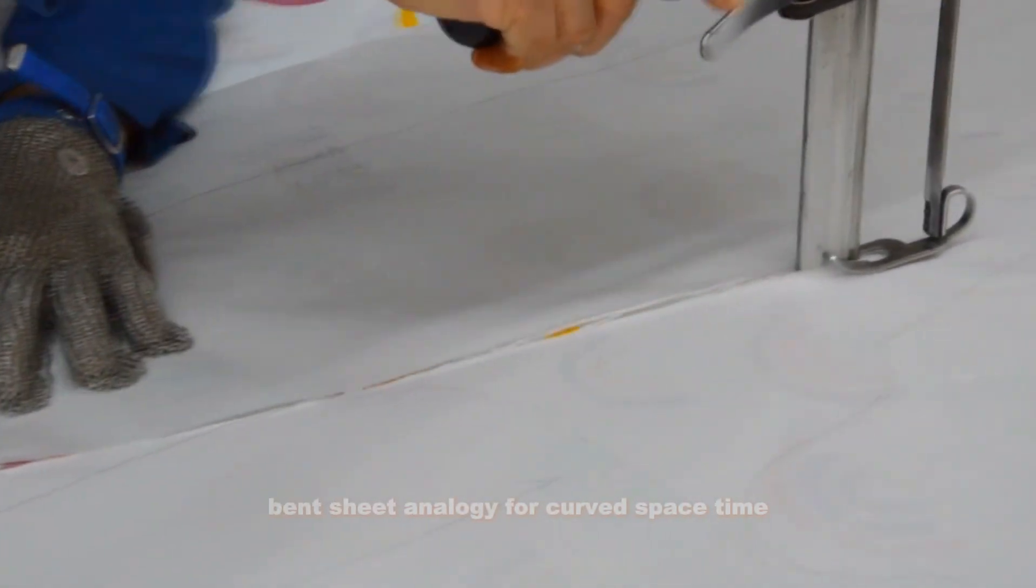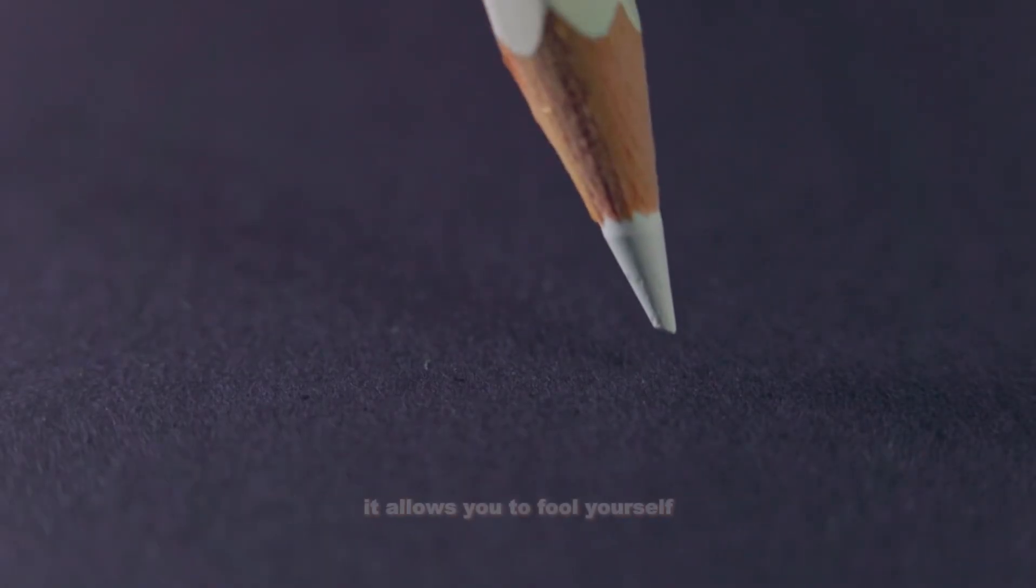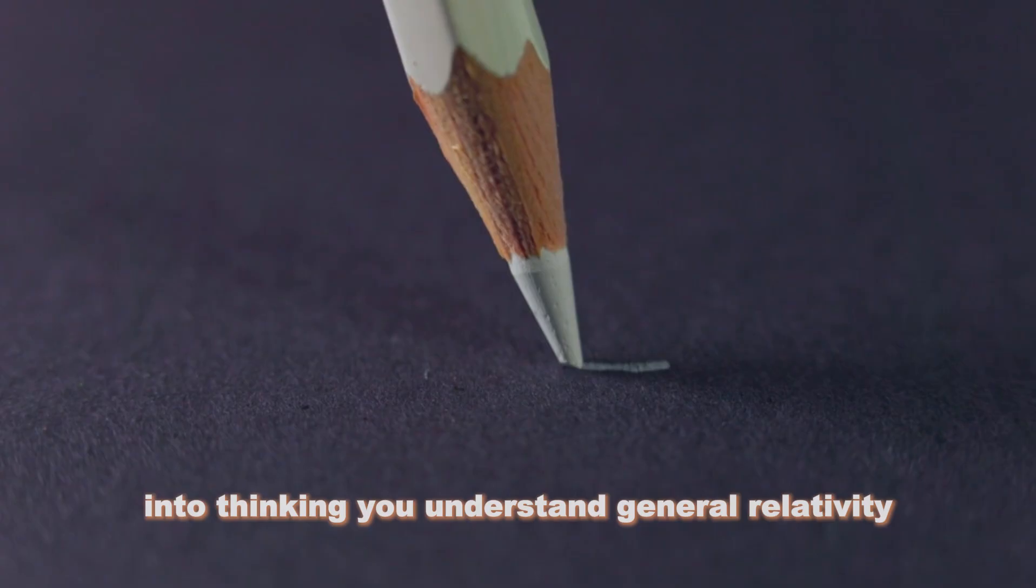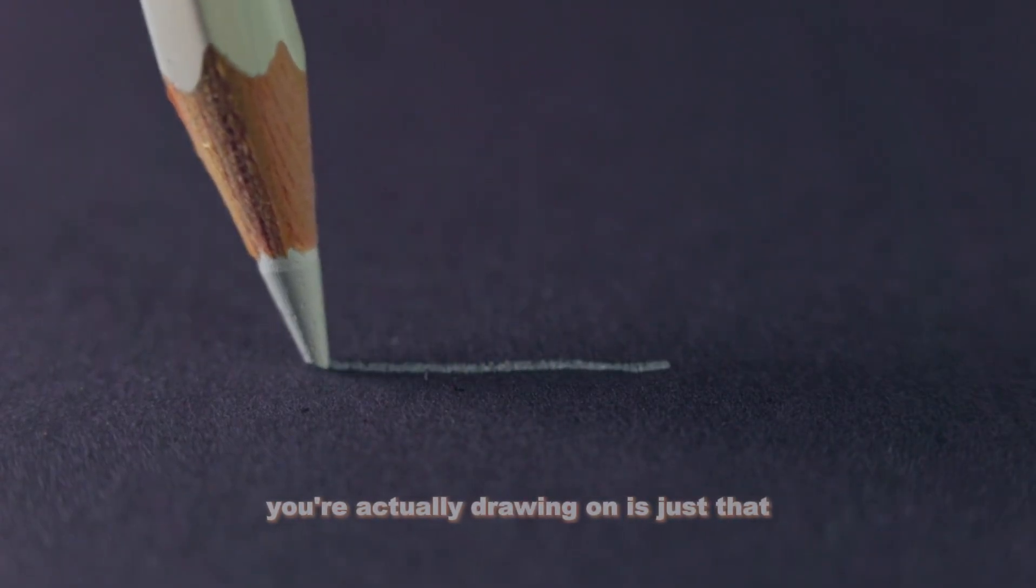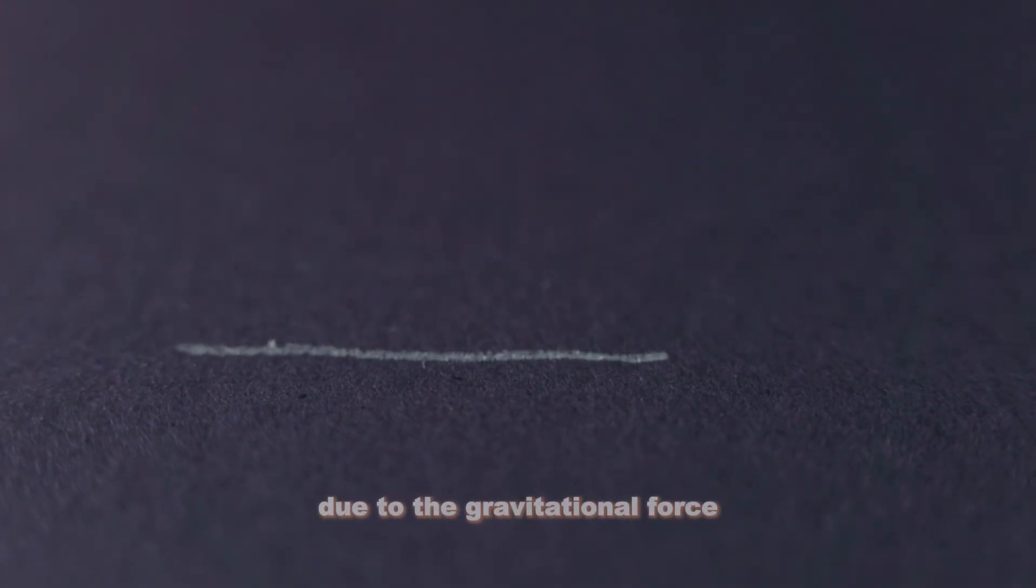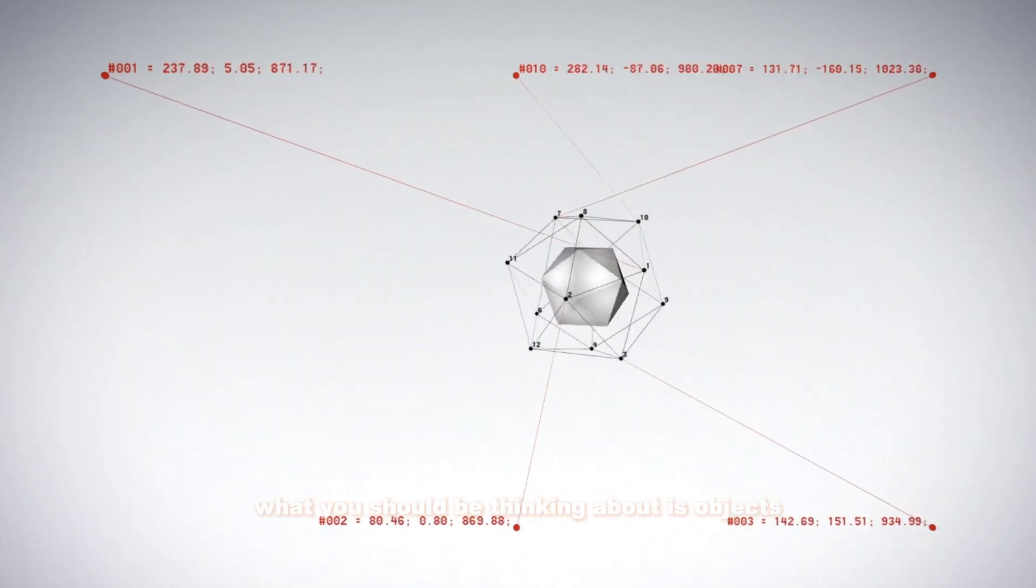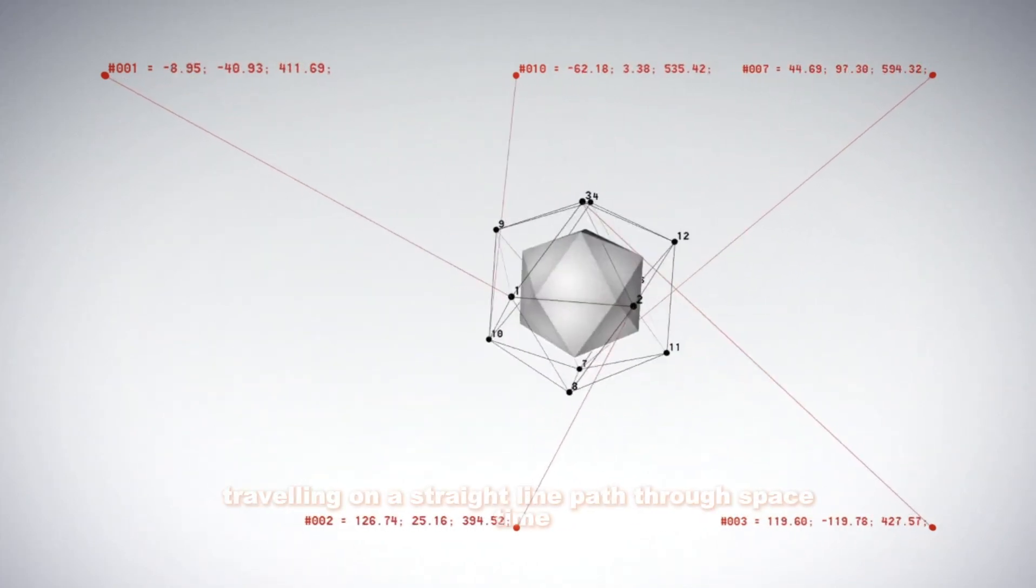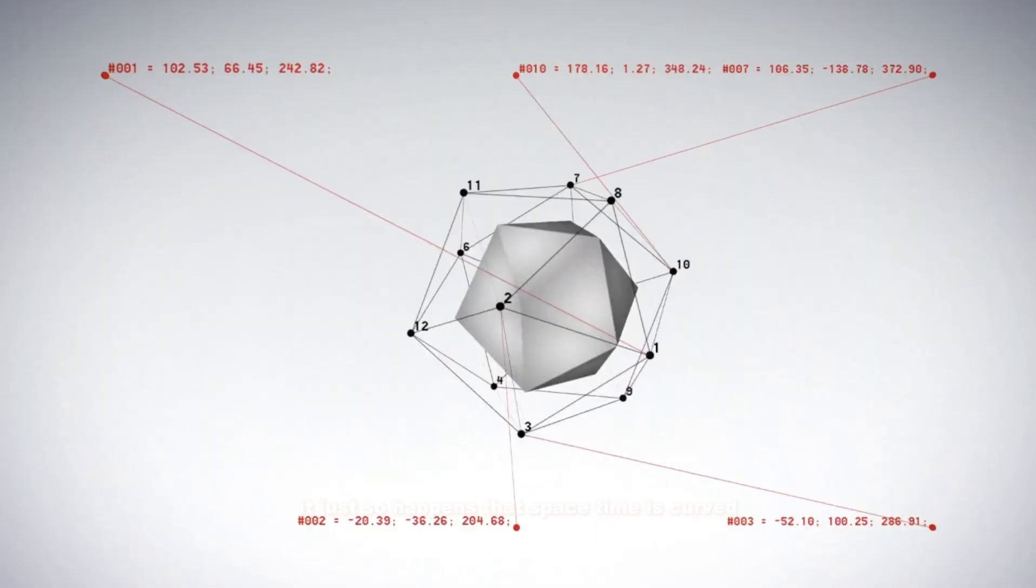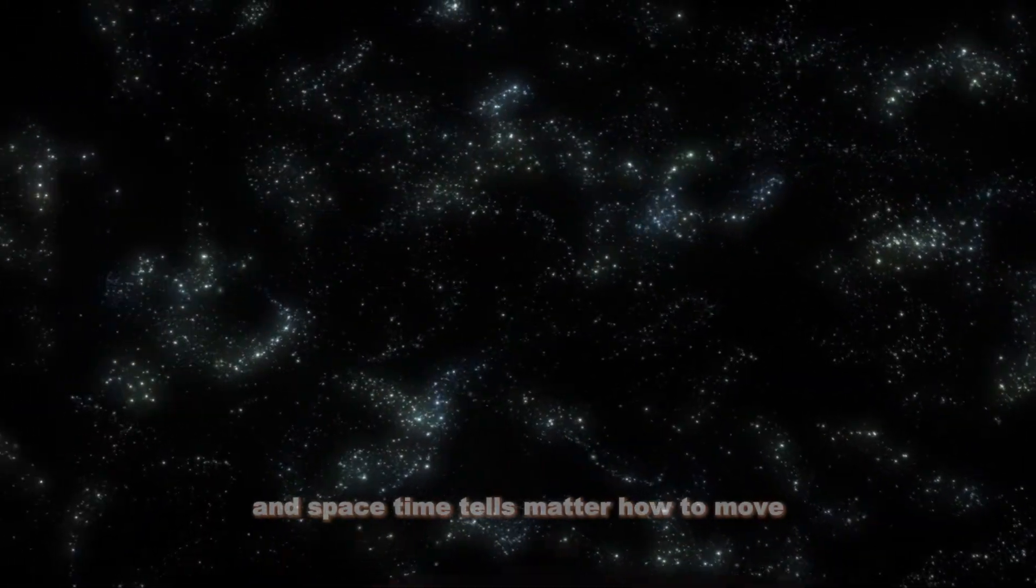This is the standard bent sheet analogy for curved spacetime, but I think this demo is misleading. It allows you to fool yourself into thinking you understand general relativity when the intuition you're actually drawing on is just that objects like to fall towards the middle of a well due to the gravitational force. But in general relativity, there is no gravitational force. What you should be thinking about is objects traveling on a straight line path through spacetime. It just so happens that spacetime is curved around massive objects, so that straight line path doesn't look like a straight line.